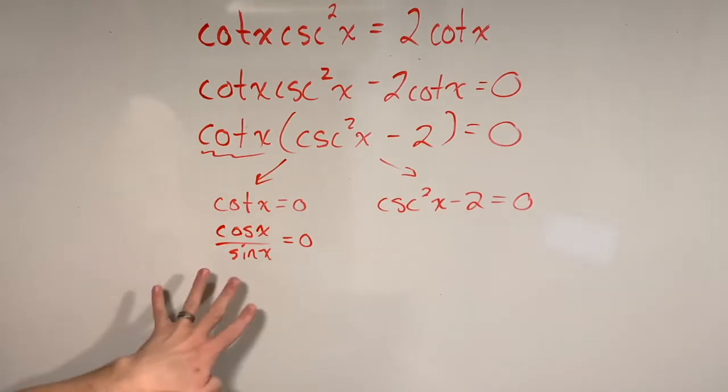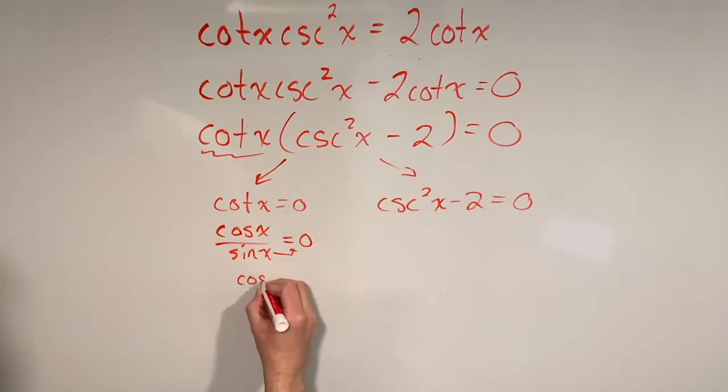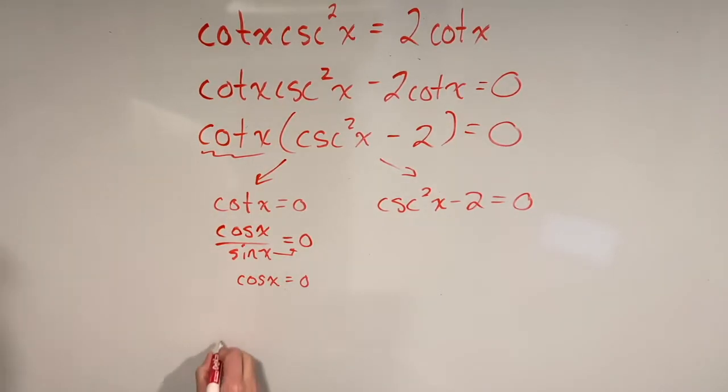Now if we want to solve for x here, we have no choice but to multiply our denominator out to be left with the cosine of x equal to zero. Now that is a very simple trig equation. You could probably solve that in your head. You could use a calculator, or you could even just draw a graph of a cosine function.